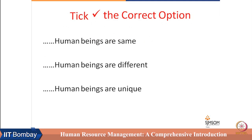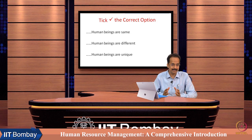If I ask you to tick mark one correct option out of the three options given below, what will be your answer? Human beings are same, human beings are different, or human beings are unique. Probably we cannot tick mark a single phrase given on this slide, because on certain things we are similar, on certain things we are different, and on certain things we are unique.